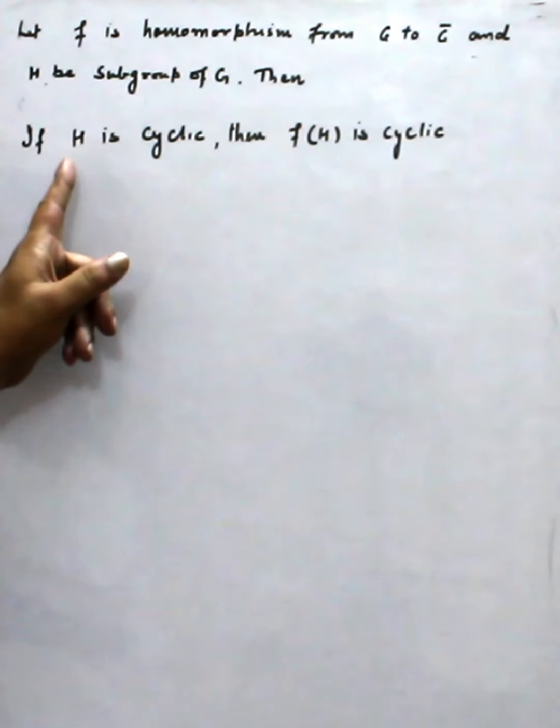F is a homomorphism from G to G bar and H is a subgroup. Then if H is cyclic, then F(H) is cyclic.